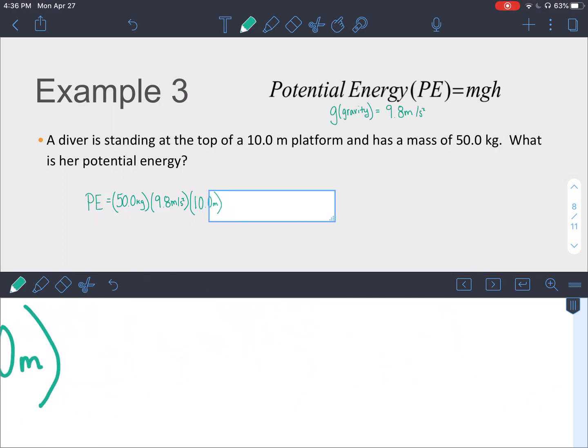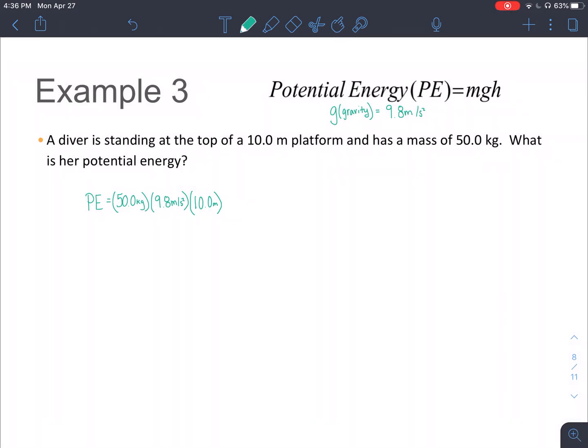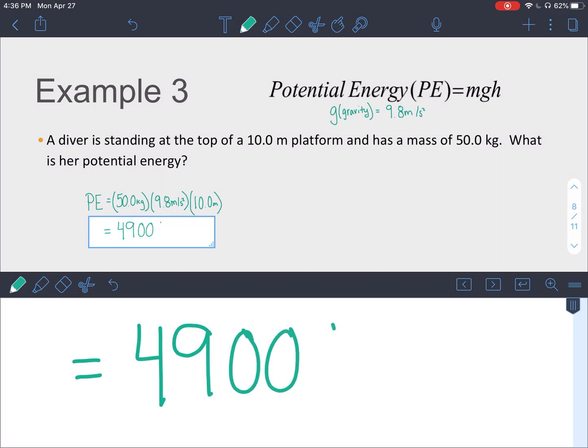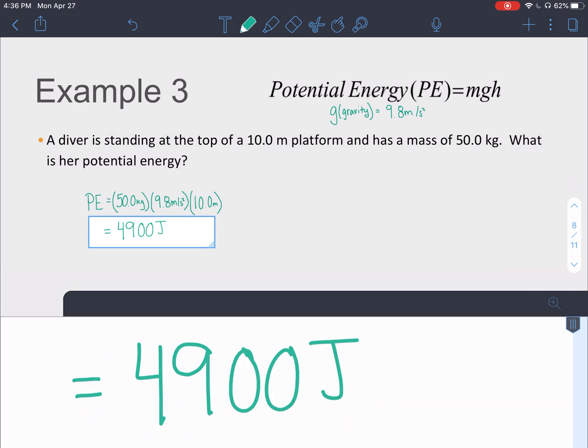All right, plug 50 times 9.8 times 10 into a calculator and you will get a potential energy of 4,900 joules. Let's talk about this. Thank you.